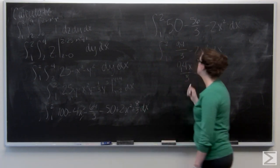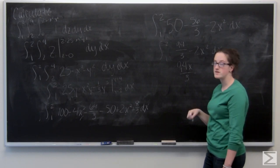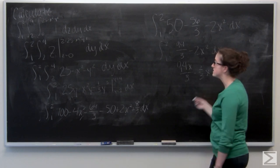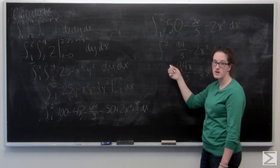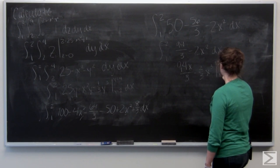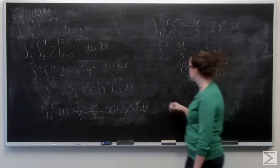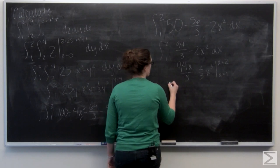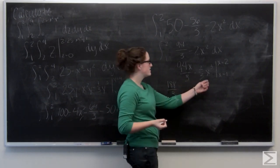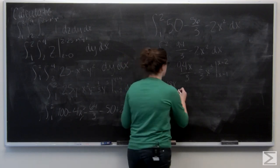2x squared becomes 2 thirds x to the third. Let's evaluate that from x equals 2 to x equals 1. Plug in my twos first. I have 188 over 3 minus 2 thirds times 8.